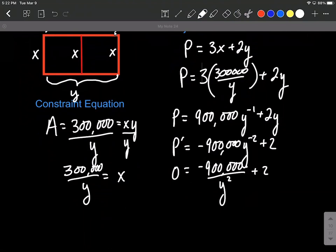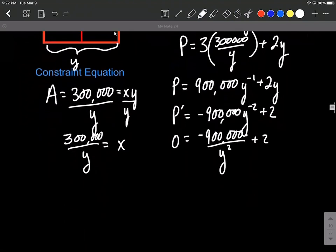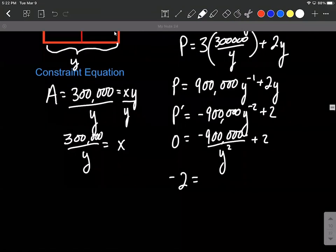To solve this down, I'm going to move the 2 to the other side, so subtract 2. So negative 900,000 over y squared. And to solve for y, I got to get it out of the denominator. So we'll multiply both sides by y squared.